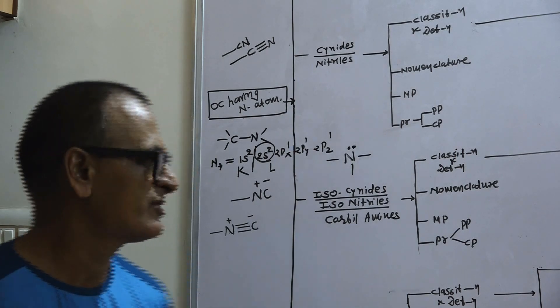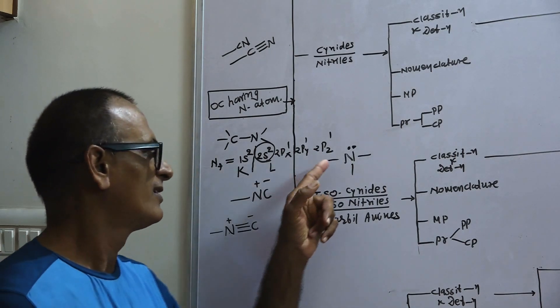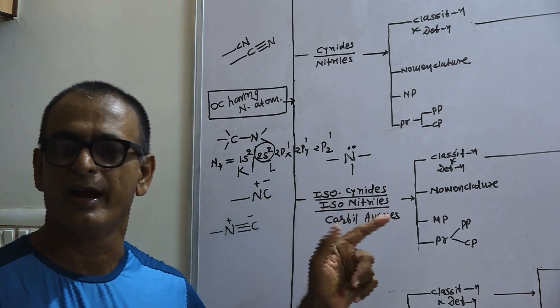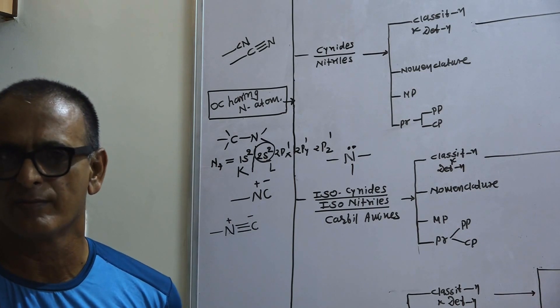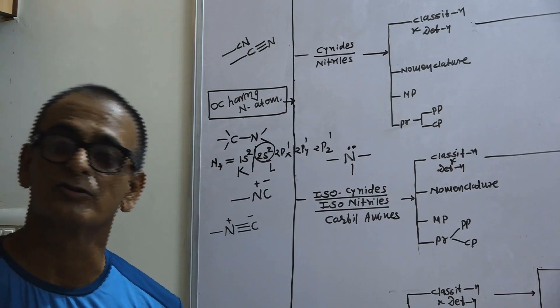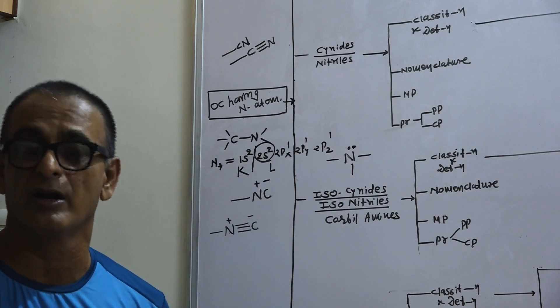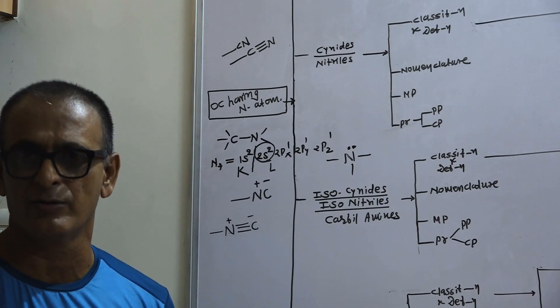This electron pair is known as an anti-bonding electron pair. It is also known as a lone pair of electrons.